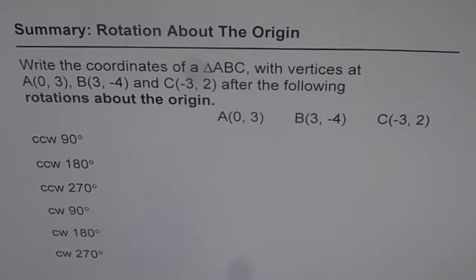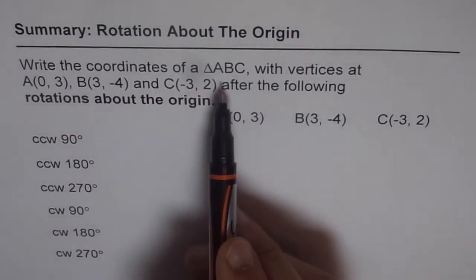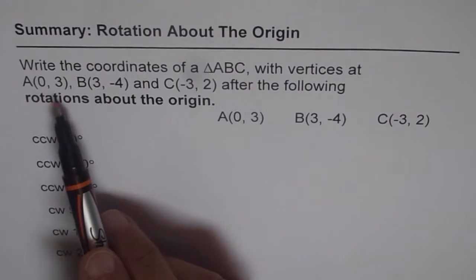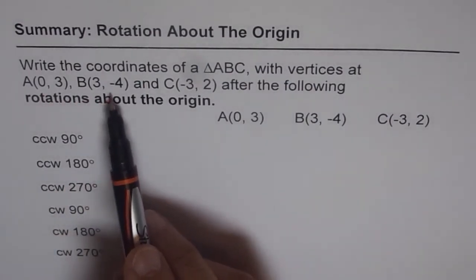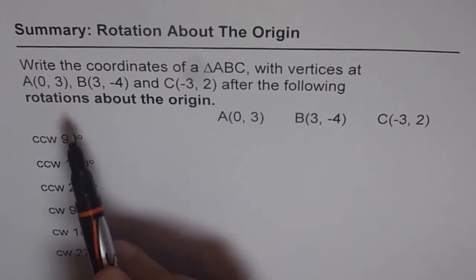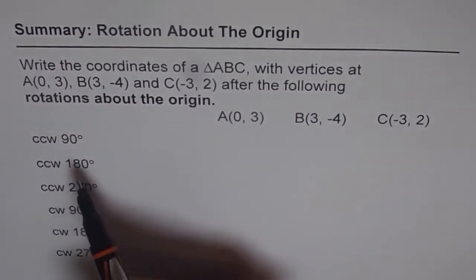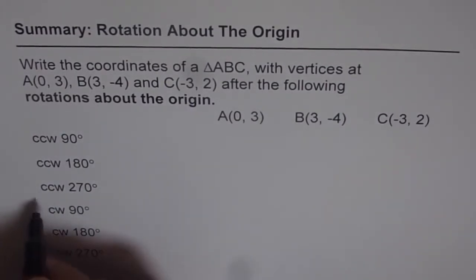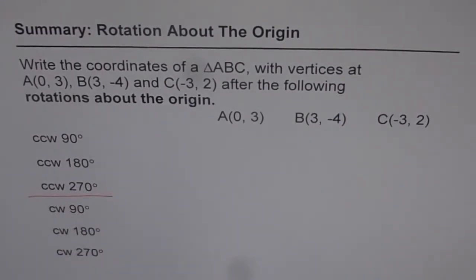Now with the help of this example, we are going to summarize the learnings of rotation about the origin. The question is: write the coordinates of a triangle ABC with vertices at A(0,3), B(3,-4), and C(-3,2) after the following rotations about the origin. We have six different rotations here — three counter-clockwise and three clockwise — so we really cover complete rotation about the origin.